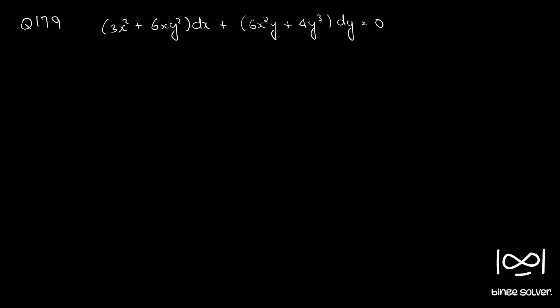Question number 179: (3x² + 6xy²)dx + (6x²y + 4y³)dy = 0. The given equation is in the form M dx + N dy = 0.